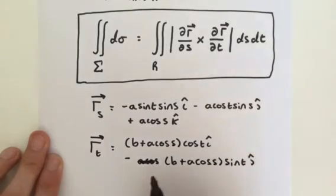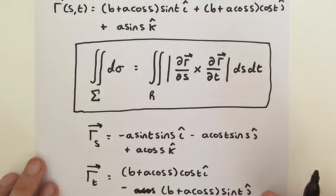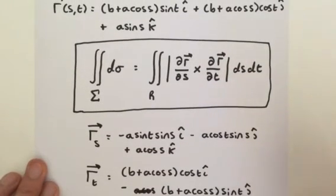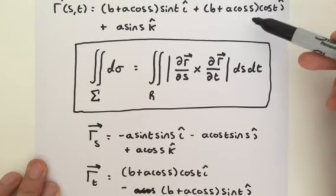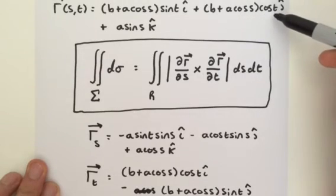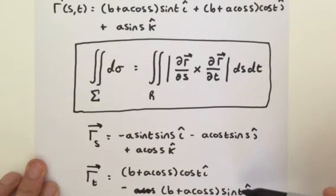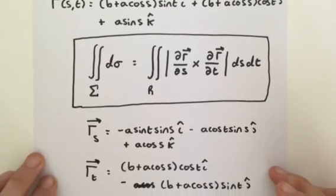So let's go back to our vector valued function. b plus a cosine of s is another constant, so we just differentiate cosine of t and we just get sine of t. Very easy.